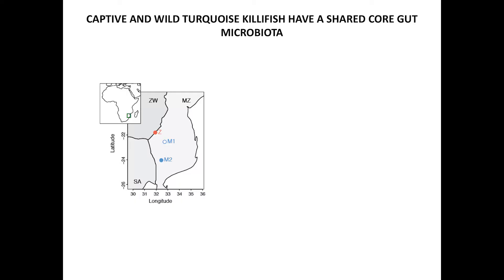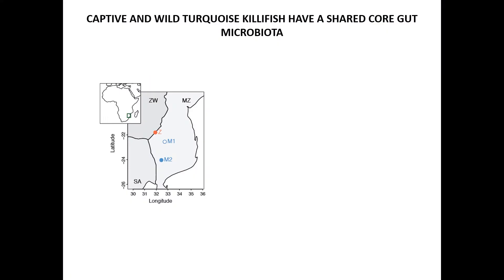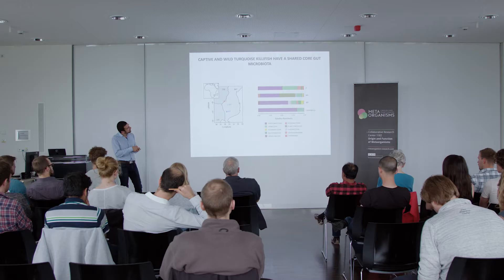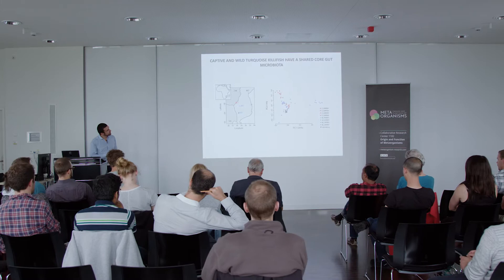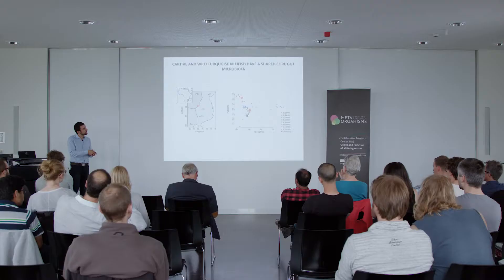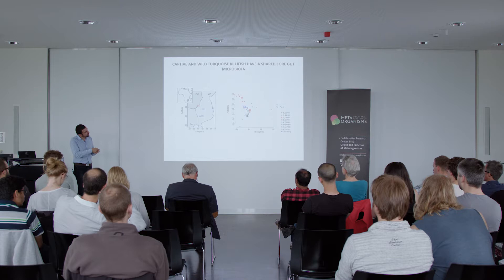Since we collected fish from wild localities, we asked how much the killifish gut microbiota in the lab resembles that in nature. These are three wild localities — one at the border between Mozambique and Zimbabwe, two in Mozambique — and the laboratory population. The lab seems to be dominated by some proteobacteria. In general, the diversity of wild populations seems higher. However, on a compressed representation of gut microbiota diversity, the lab population, although less diverse, still falls within the diversity of the species — it's not clustering far away from the cloud, which is comforting.